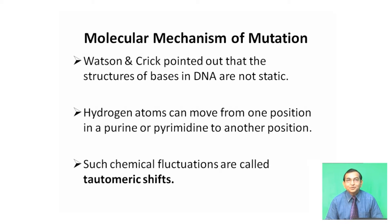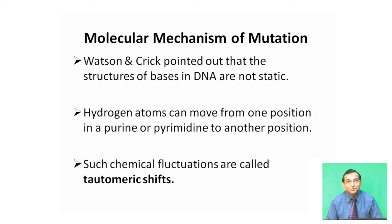Watson and Crick pointed out that the structure of bases in DNA are not static. That is, purine and pyrimidine bases are not static. Hydrogen atoms can move from one position in a purine or pyrimidine to another position. Such chemical fluctuations are called tautomeric shifts — that is, movement of hydrogen atoms from one position of the base to another position.